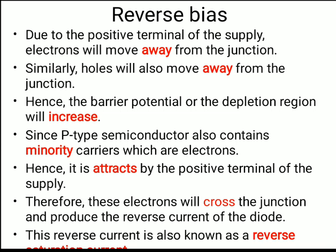Due to the positive terminal of the supply, electrons move away from the junction and holes also move away, increasing the barrier potential and depletion region. However, the minority carriers — electrons in the p-type — are attracted by the positive terminal. These electrons cross the junction and produce the reverse current, also known as reverse saturation current. So in forward bias current flows, but in reverse bias only a tiny reverse saturation current flows.